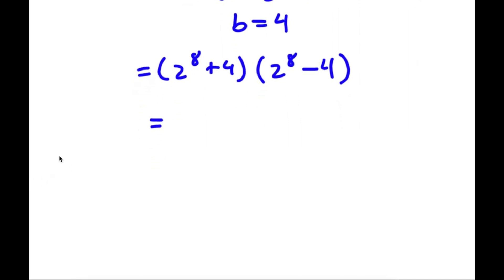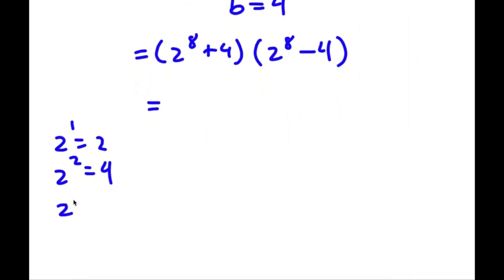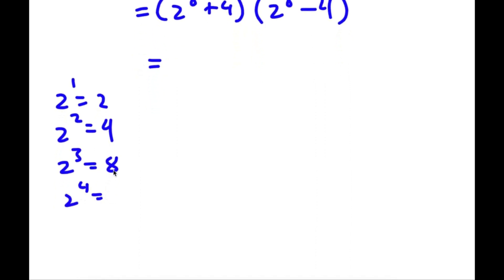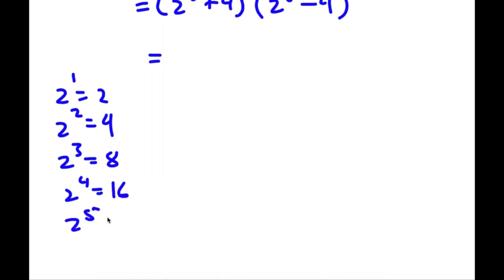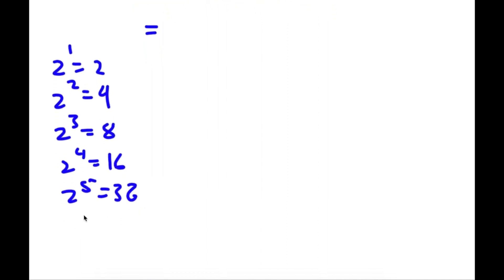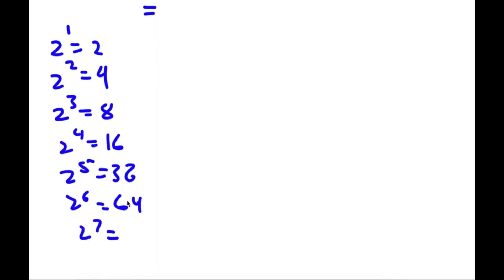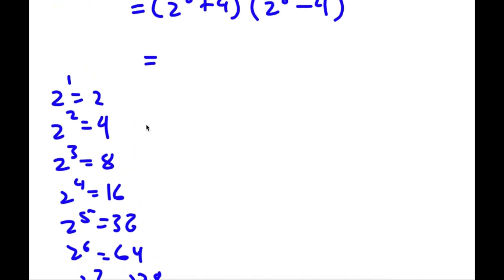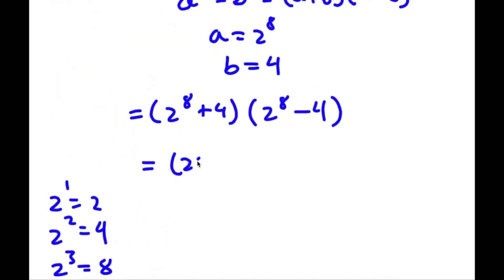Now 2 to the power of 8: 2 to the power of 1 is 2, 2 squared is 4, 2 cubed is 8, 2 to the 4th is 16, 2 to the 5th is 32, 2 to the 6th is 64, 2 to the 7th is 128, and finally 2 to the power of 8 is double of 128, which is 256. So now I have 256 plus 4, times 256 minus 4.